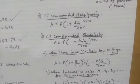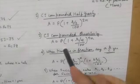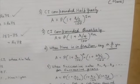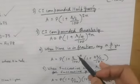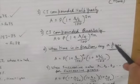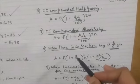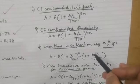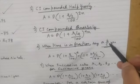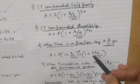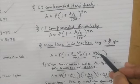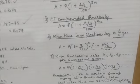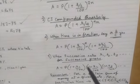A basic change comes when time is in fraction, say a and b/c years. Suppose a is 2 and b/c is 2/3. Then the formula becomes P into one plus r by 100 whole to the power 2, multiplied by one plus two-thirds r divided by 100, where b is 2 and c is 3, giving two r over three hundred.